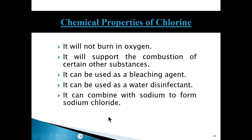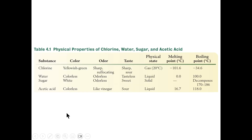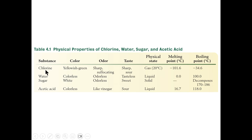That's the difference between chemical and physical properties. Here is a list of various substances with different physical and chemical properties. For water: it is colorless, odorless, and tasteless, a liquid under normal room temperature with a melting point of 0 degrees Celsius and a boiling point of 100 degrees Celsius. You can also see physical properties listed for sugar, acetic acid, and other substances.